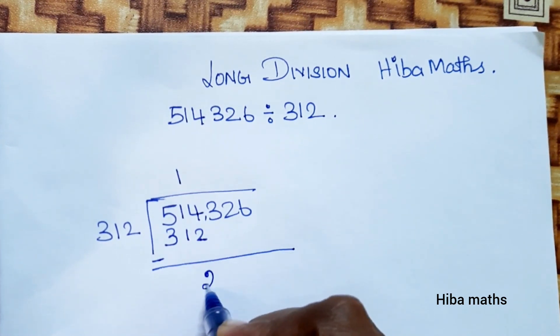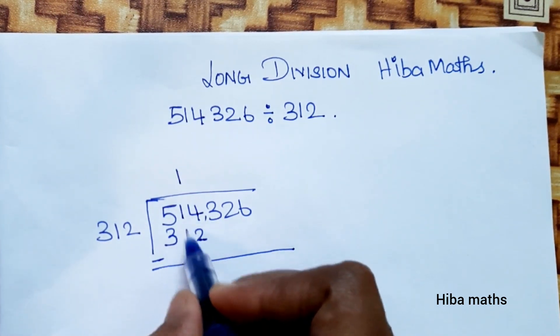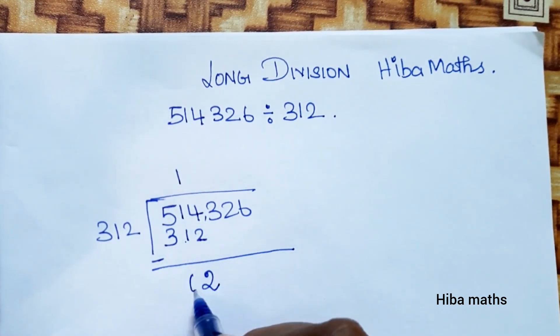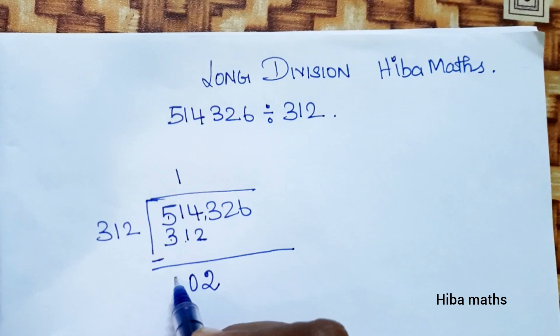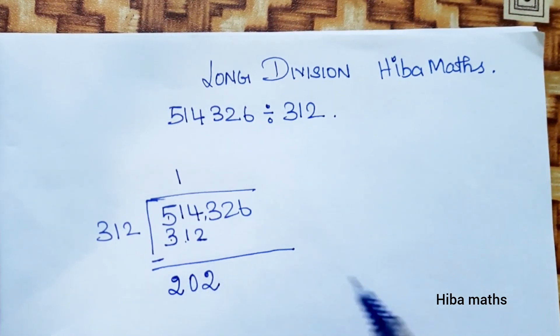Then you subtract: 4 minus 2 is 2, 1 minus 1 is 0, 5 minus 3 is 2. We can do it. The answer for this step is 2.